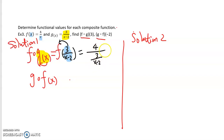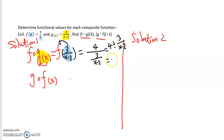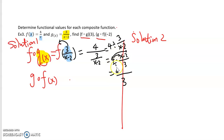We can also simplify this a little bit — if you don't want to simplify it, you can leave this as your answer. But I'm going to try to simplify. Because this is like 4 divided by 3 over (x minus 2), we use keep, change, flip — the division rule for fractions. That gives us 4 multiplied by (x minus 2) over 3, distributing across. So 4 times x minus 2 gives us 4x minus 8 over 3. That will be the final composite function f∘g(x) = (4x − 8)/3.